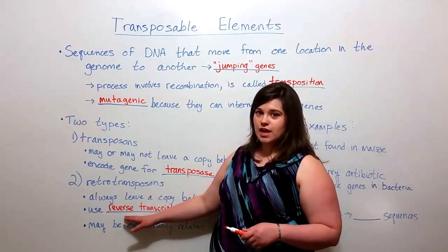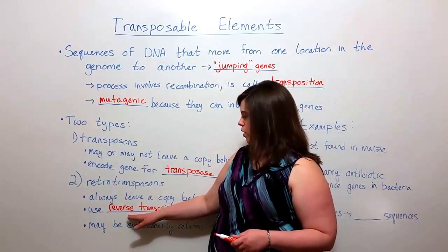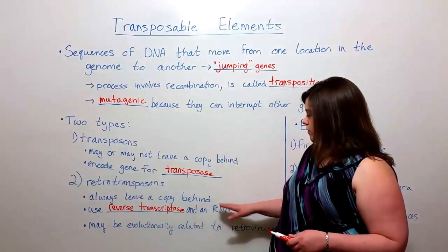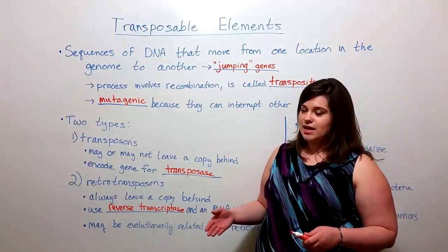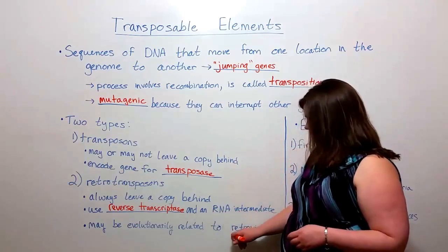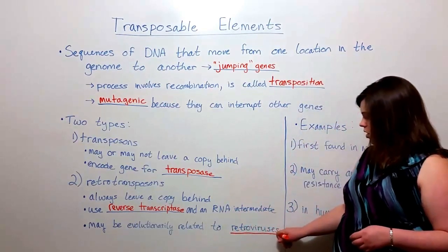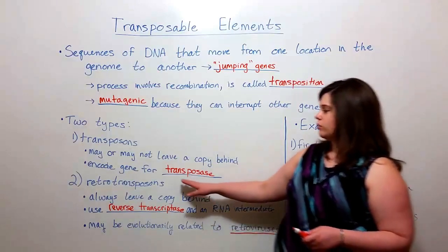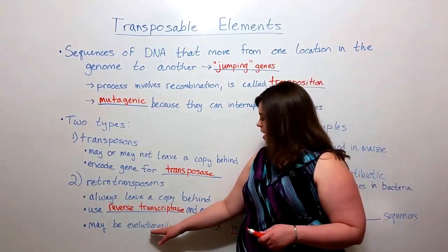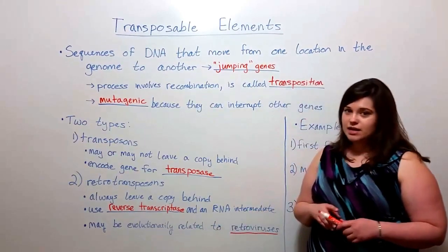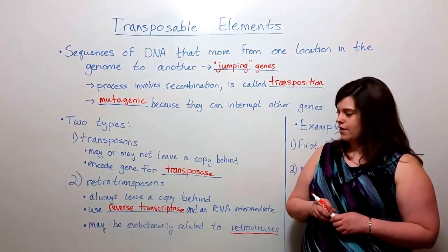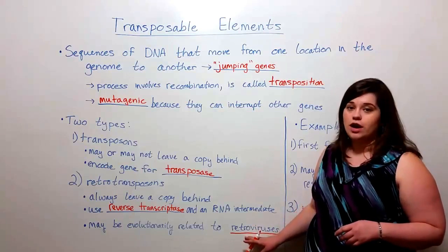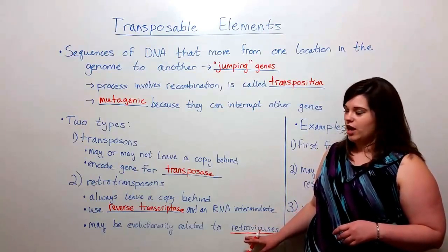Now you may have heard of this kind of mechanism before, where reverse transcriptase is used to convert an RNA intermediate into DNA. And that would be in a type of virus called retroviruses. And in fact, these retrotransposons may be evolutionarily related to retroviruses. Retroviruses, the most common one you've heard of probably is HIV.